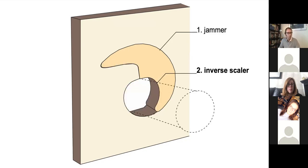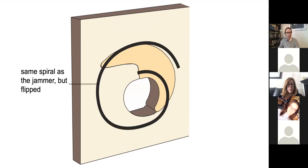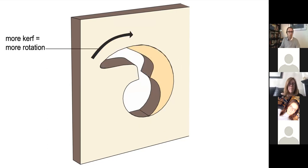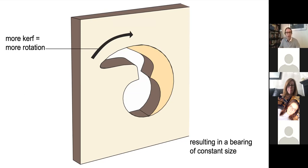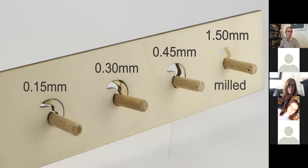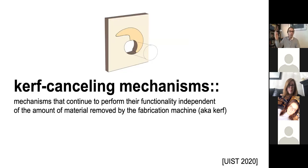At the same time, there's the inverse scalar because we need to hold the axle in place. We take the same self-similar spiral, but we flip it — as a result, as more kerf adds to more rotation, the additional kerf decreases the cutout size that holds the axle in place. Therefore we have a bearing that has a constant size. For that reason, we call these things curve-cancelling mechanisms — mechanisms that continue to perform their functionality independent of the amount of material removed by the fabrication machine.